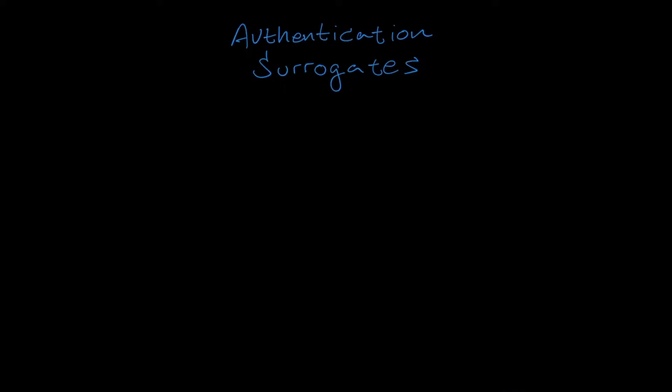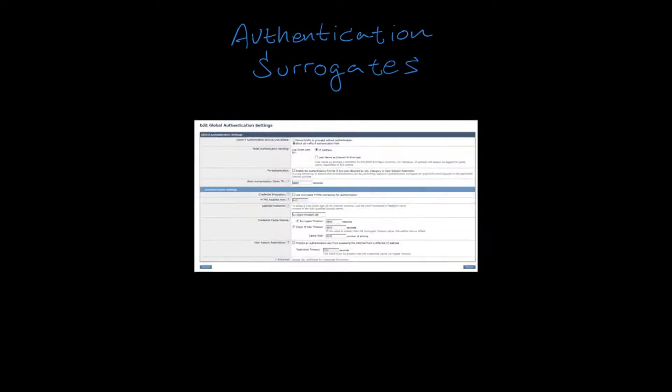The length of time that a surrogate will be used is defined by the Surrogate Timeout option in the Global Authentication settings and is 3600 seconds, or one hour by default.